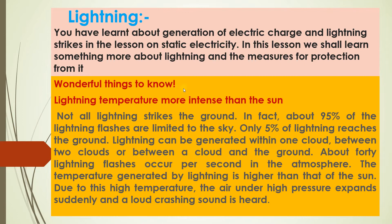So let us see wonderful things to know. Lightning temperature is more intense than the sun — sun se bhi zyada lightning ka temperature hota hai. In fact, about 95% of lightning flashes are limited to the sky; only 5% lightning reaches the ground. Lightning can be generated within one cloud, between two clouds, aur between a cloud and the ground. About 40 lightning flashes occur per second in the atmosphere — ek second mein 40 lightning jo hai atmosphere mein ghatit hoti hain.